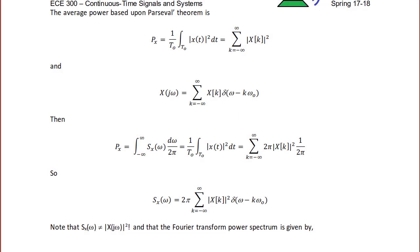The average power based upon Parseval's theorem is that p_x equals one over T₀ times the integral over one period of |x(t)|² dt, which equals the summation from k = −∞ to ∞ of |x[k]|².